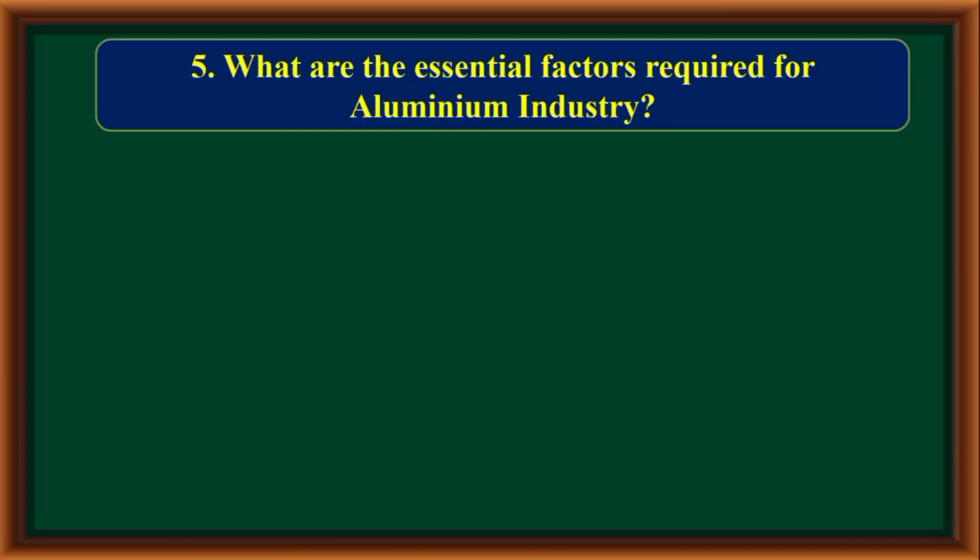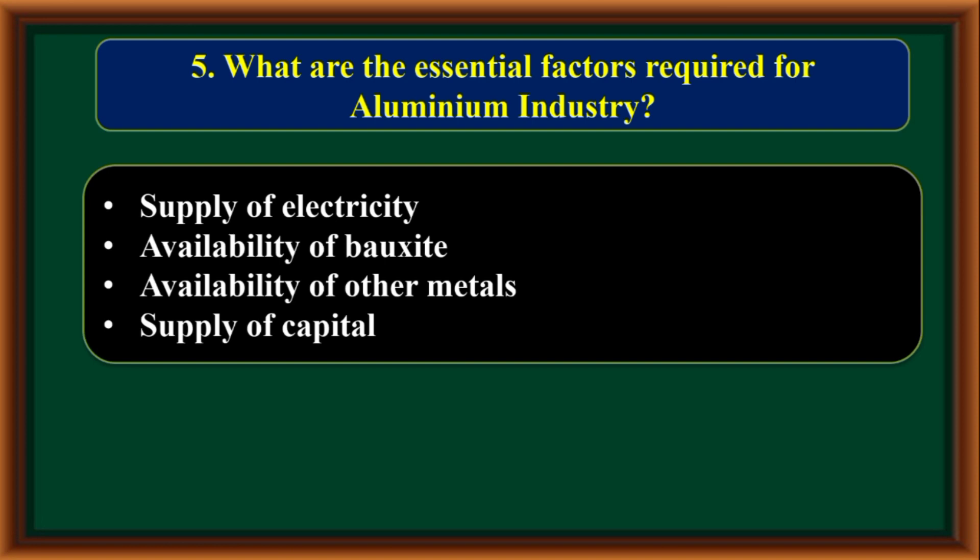What are the essential factors required for the aluminium industry? The essential factors are: supply of electricity, availability of bauxite, availability of other metals, and supply of capital.